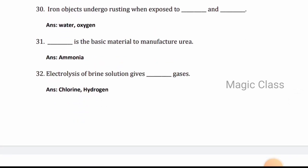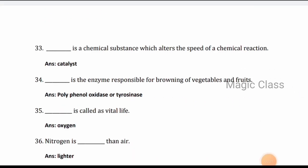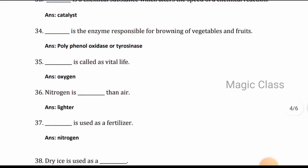Question 32: Electrolysis of brine solution gives chlorine and hydrogen gases. Question 33: Catalyst is a chemical substance which alters the speed of a chemical reaction.